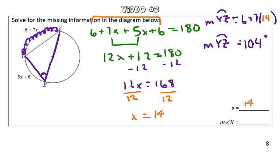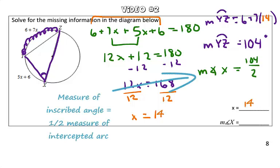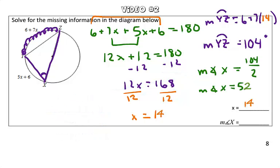Now that we know the measure of arc yz, to solve for the measure of angle x, we're going to take the arc yz, which is 104, and divide it by 2. Because we previously learned that the relationship between the inscribed angle and the arc that it intercepts, or the arc that it opens up to, the measure of the angle is half the measure of that arc. Therefore, the measure of angle x is going to be 52 degrees.